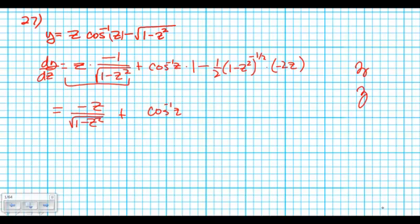Over here, that two and that two cancel. This negative and that negative knock each other out. So, leaving me a positive z over the square root of one minus z squared.